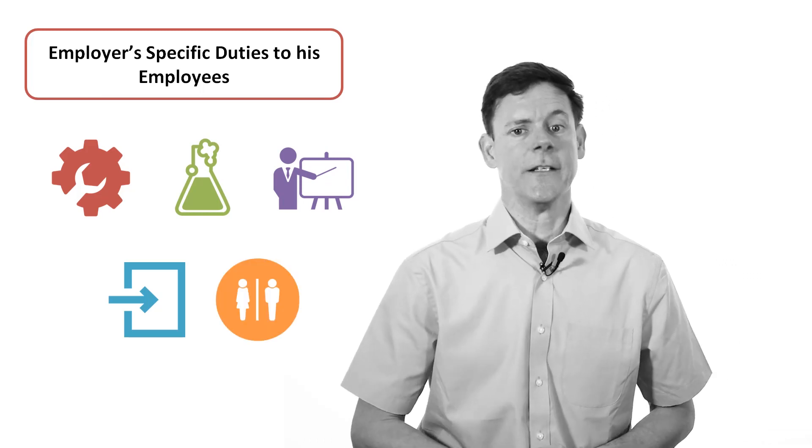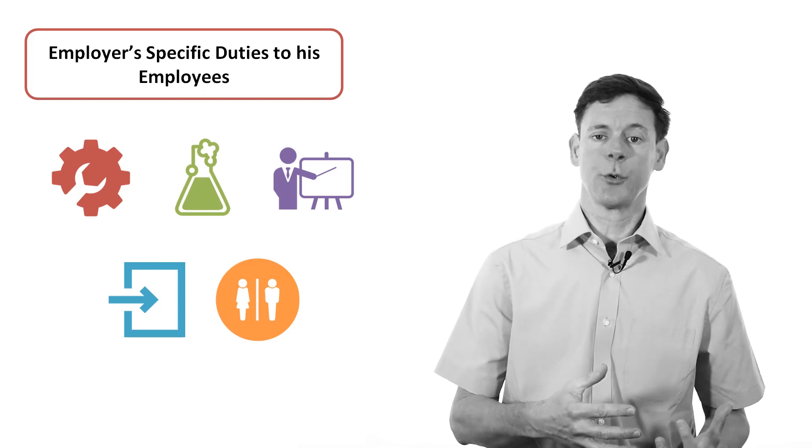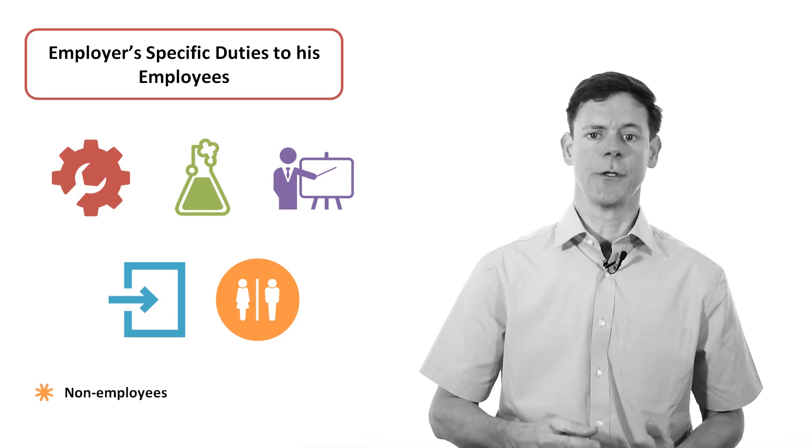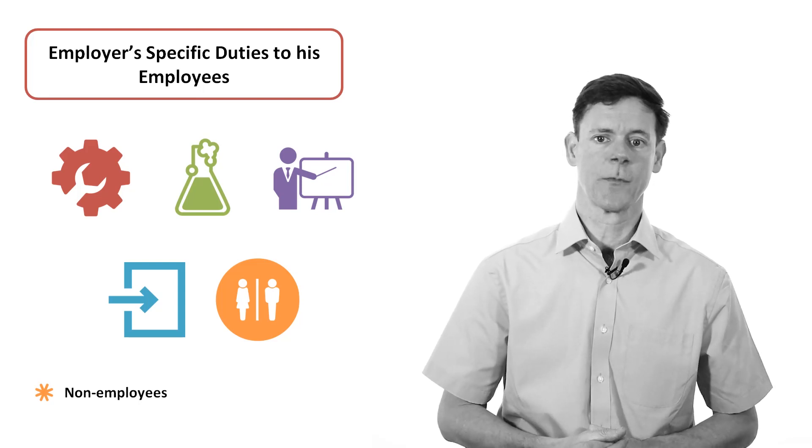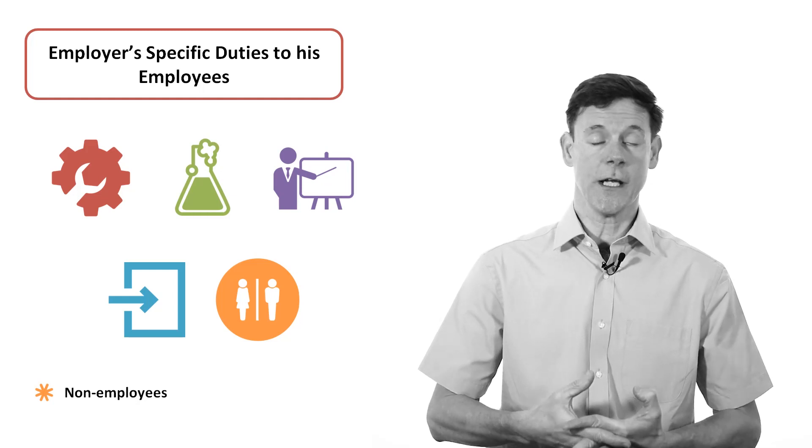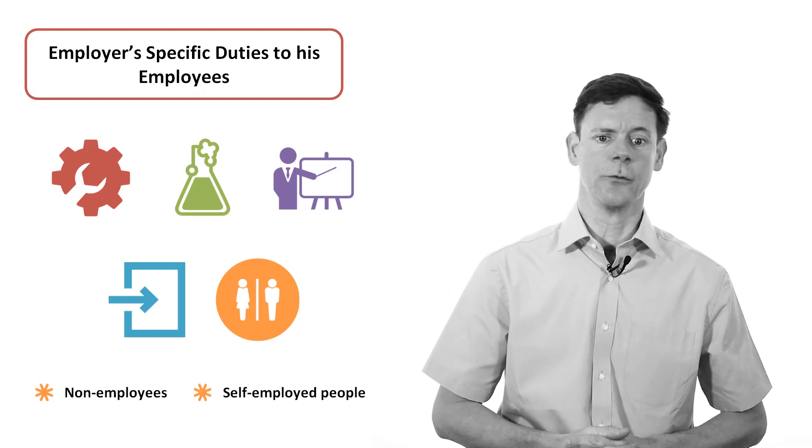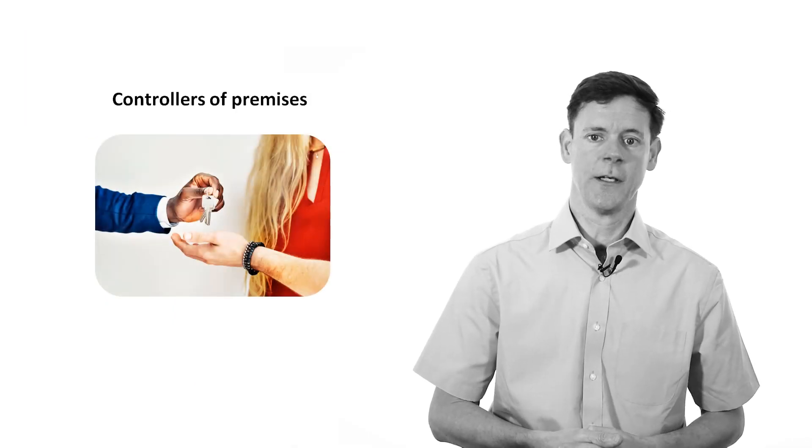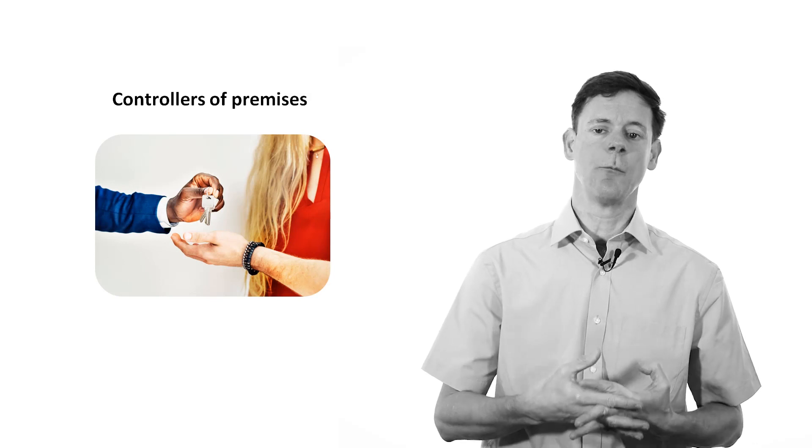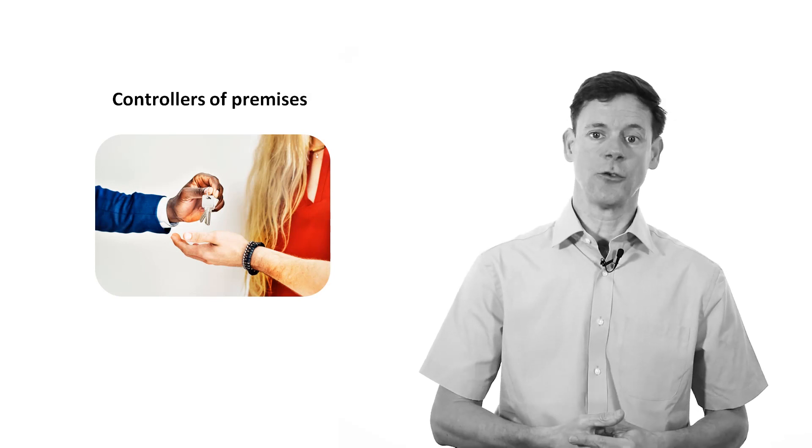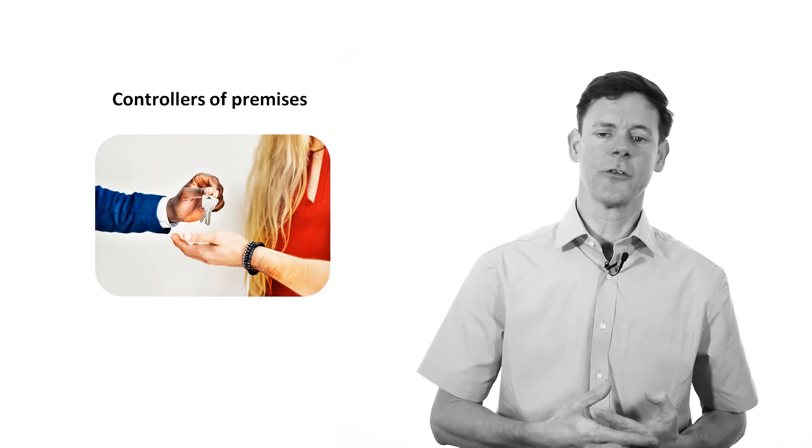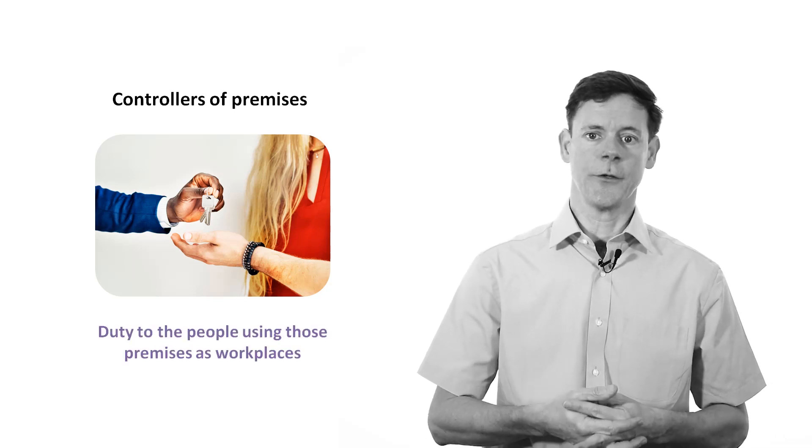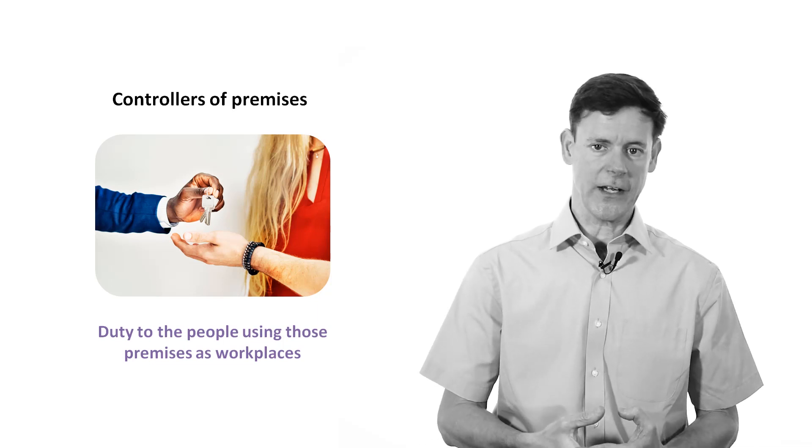Another section of the Health and Safety at Work Act identifies that the employer owes a duty to non-employees to ensure that non-employees will be safe and without risk to health from the employer's undertaking. This duty applies to some extent to self-employed individuals as well. The Act also identifies that controllers of premises are duty holders. Controllers of premises are people like property management companies and landlords of multi-occupancy buildings which are used as workplaces. These controllers have a duty to ensure that the workplaces they're allowing other people to occupy are safe.